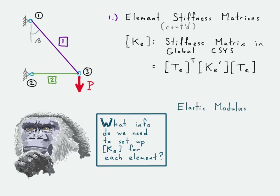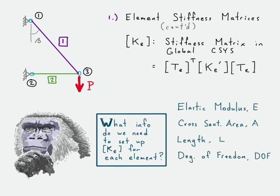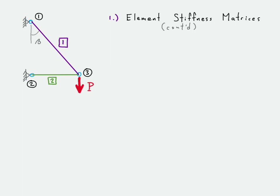What information do we need to set up the global stiffness matrix equation for each element? First, we need the elastic modulus. Next, the cross-sectional area. Then the length — those go into the stiffness matrix in the elemental coordinate system. We also need to know the degrees of freedom the element connects, and we need the element angle, which is used in the transformation matrix on either side.